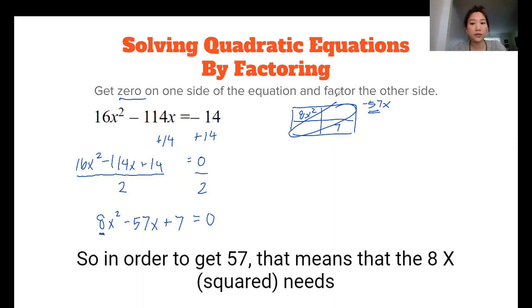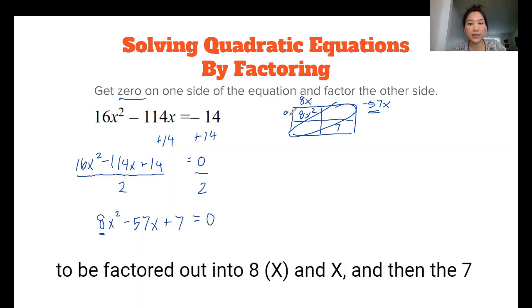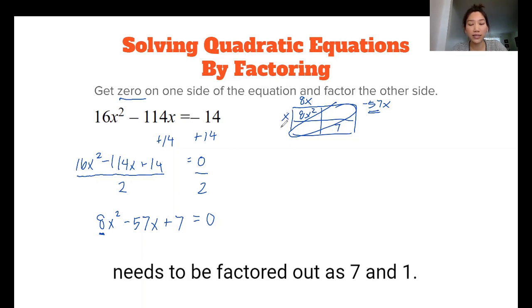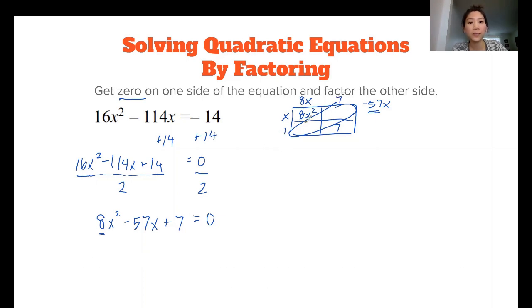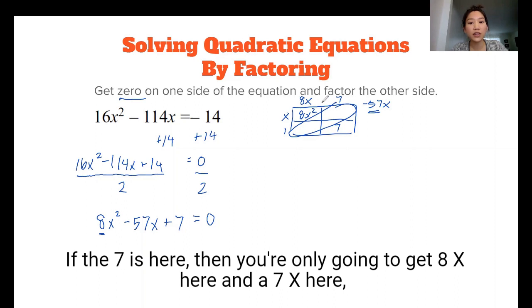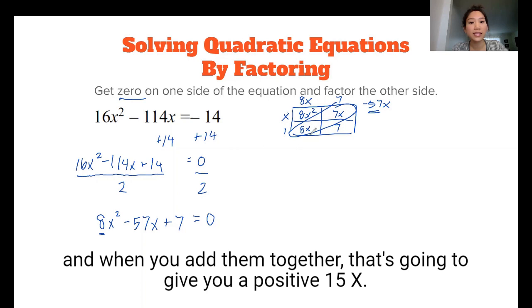And then the 7 needs to be factored out as 7 and 1, but so there are two options, right? You could put the 7 here and the 1 here or the other way around. If the 7 is here, then you're only going to get an 8x here and a 7x here.